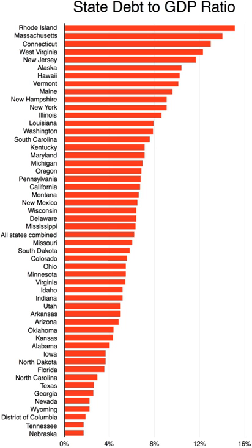In 40 of the 49 bicameral state legislatures, the lower house is called the 'House of Representatives.' The name 'House of Delegates' is used in Maryland, Virginia, and West Virginia. California and Wisconsin call their lower house the 'State Assembly,' while Nevada and New York simply call the lower house the 'Assembly.' New Jersey calls its lower house the 'General Assembly.'